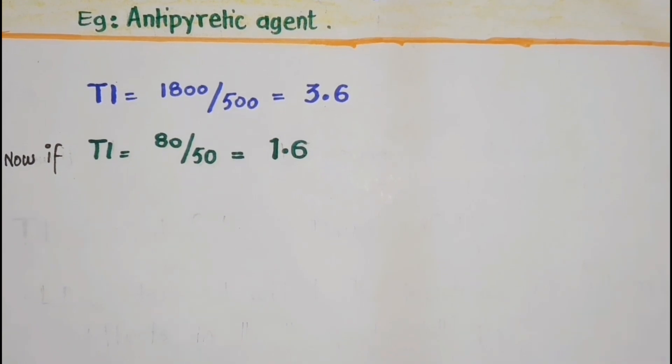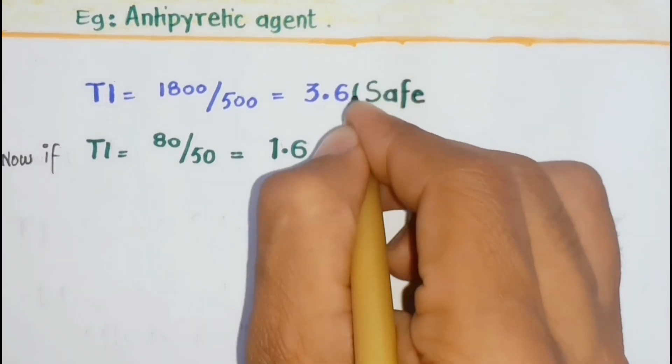So, that's how the therapeutic index is a measure of a drug's safety by drawing attention to the relationship between the effective and toxic doses, because here larger value indicates a wide margin between doses that are effective and doses that are lethal, and thus the drug is safe.